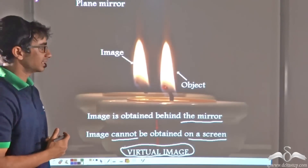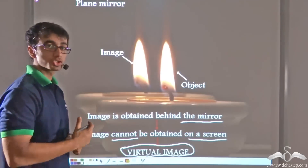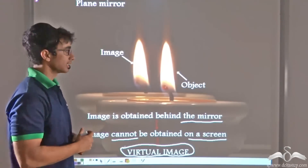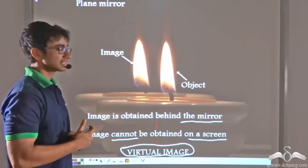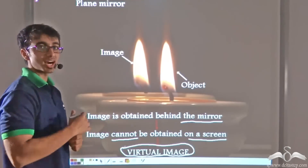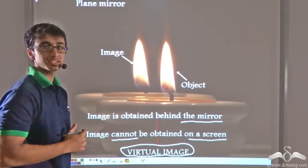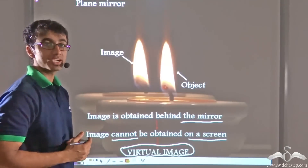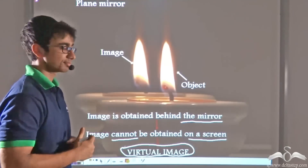The image that is obtained behind the mirror, as is the case with convex mirrors and also plane mirrors, and which cannot be obtained on a screen, is known as a virtual image. In case of a virtual image, the object is on the other side of the mirror as compared to the image.